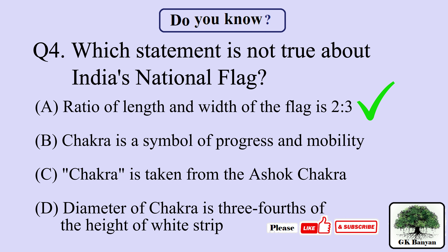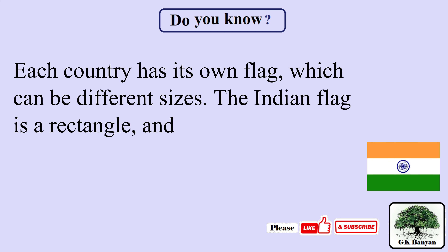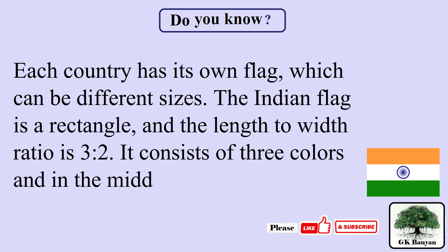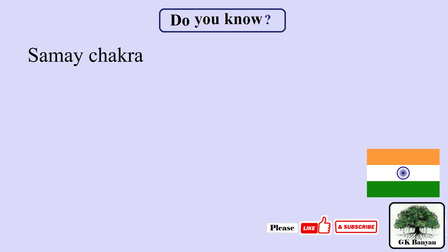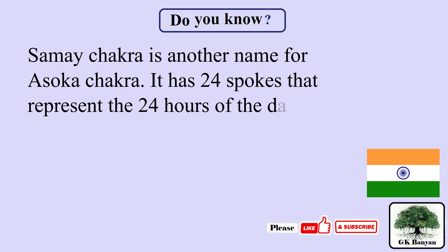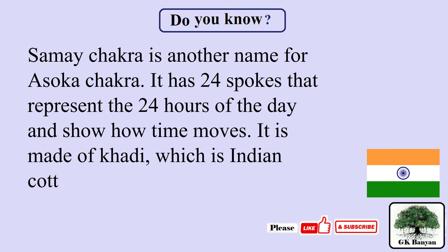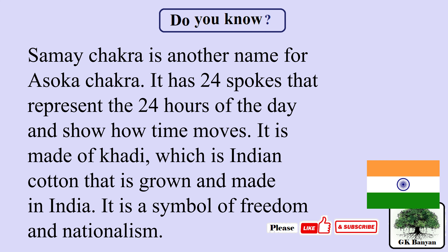The ratio of length and width of the flag is 2:3 is the false statement. The Indian flag is a rectangle and the length-to-width ratio is actually 3:2. It consists of 3 colors and in the middle there is a wheel. Samay Chakra is another name for the Ashoka Chakra and it has 24 spokes representing the 24 hours of the day. The flag is made of khadi — Indian cotton grown and made in India — and is a symbol of freedom and nationalism.